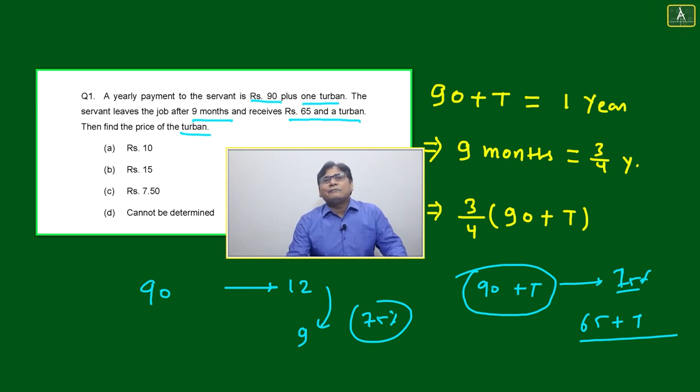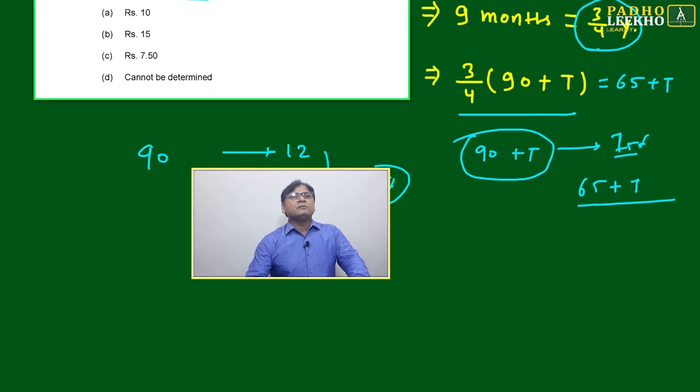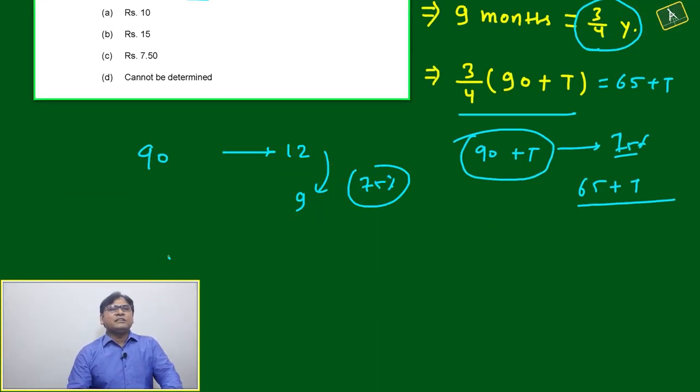Then here: 90 plus T is equal to one year. Nine months is three by four year, means three by fourth of 90 plus T will be equal to 65 plus T. That is simple. Then here once you will solve this equation, simple way you can solve, there is no issue.